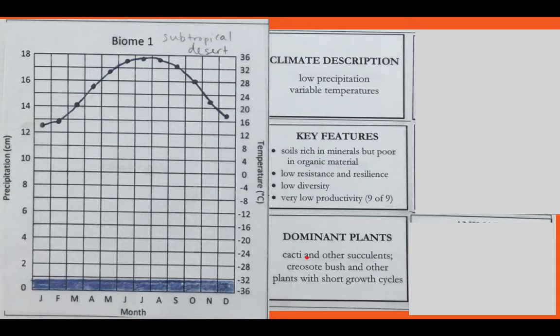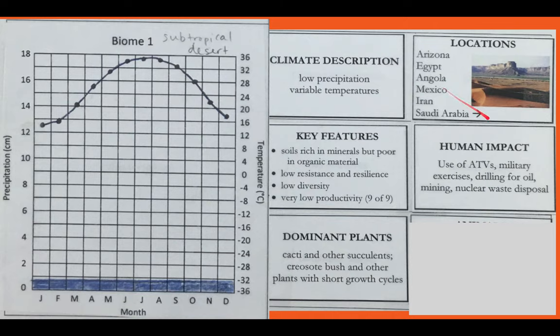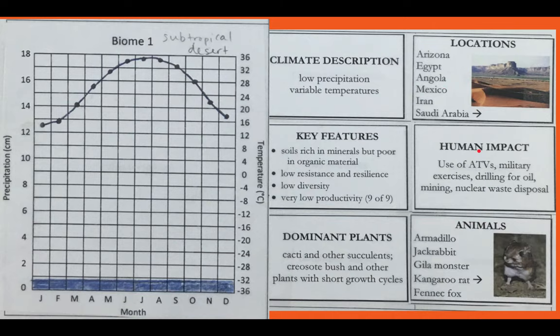You'd expect cacti as the dominant plants. Egypt, Angola, Mexico, Iran, Saudi Arabia, where we find deserts. Human impacts, and then the animals as well. Again, if you don't find it in your module, feel free to use the internet as well.